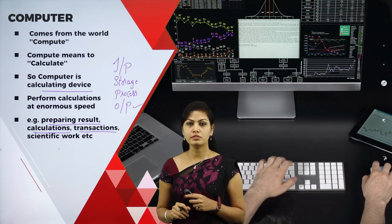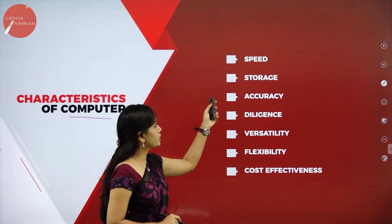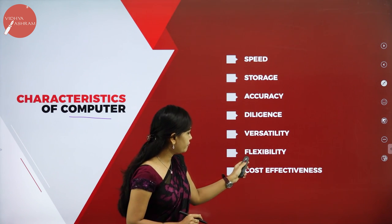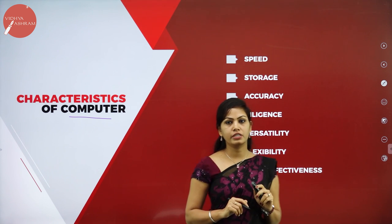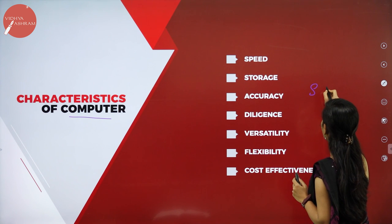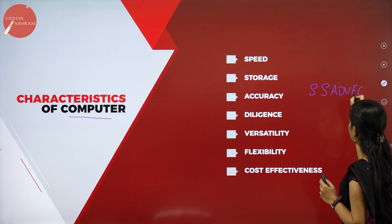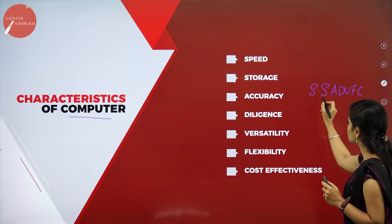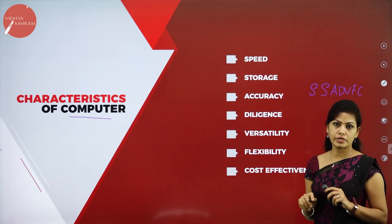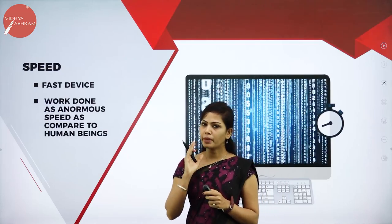There are mainly seven characteristics of computer. You can remember them using the shortcut: SSADVFC — Speed, Storage, Accuracy, Diligence, Versatility, Flexibility, and Cost Effectiveness.